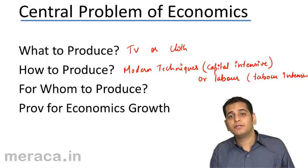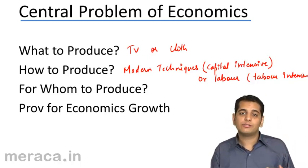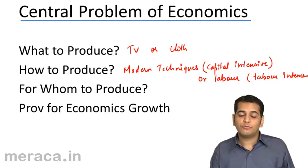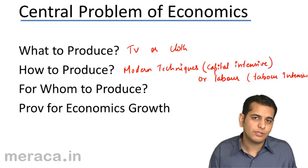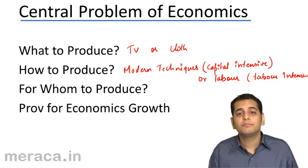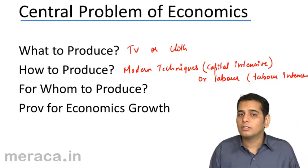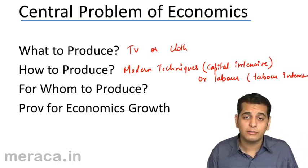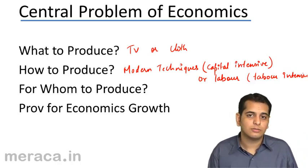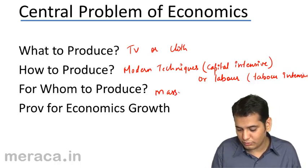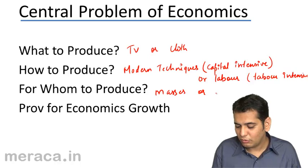Once we know how to produce goods, our next question is for whom to produce. Do we produce the goods for the poorer section of the society, or for the richer section, or for the middle class? Which section of the society do we need to target? That is, do we need to produce for the masses or for the classes?